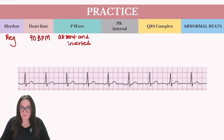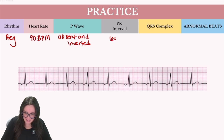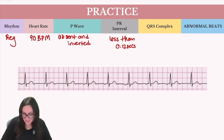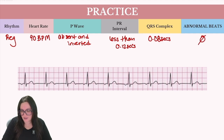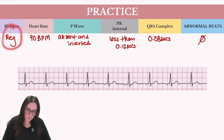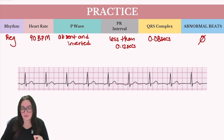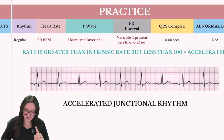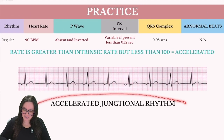Because I have inverted P waves, I do have a little bit of variation in my PR interval, but ultimately it's going to be less than 0.12 seconds. Taking a look at our QRS complex, it does appear to be narrow and normal all the way down our six-second strip — approximately 0.08 seconds. And I don't have any abnormal beats. So knowing we have a regular rhythm at 90 beats per minute with variation in P waves, and since this heart rate is greater than the intrinsic rate but less than 100, I have an accelerated junctional rhythm.